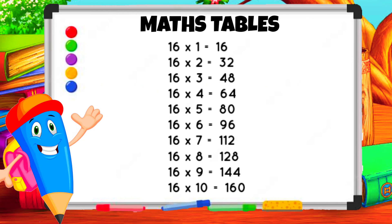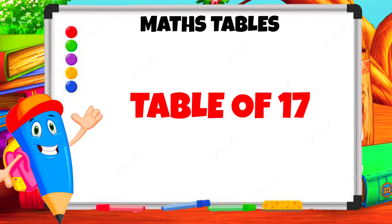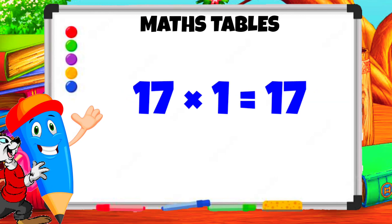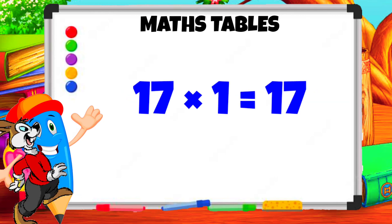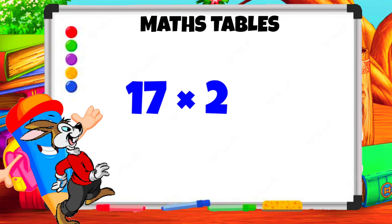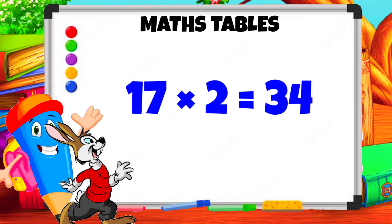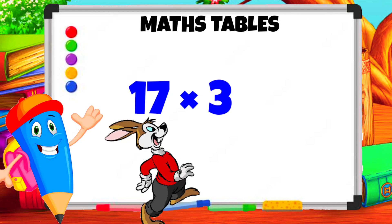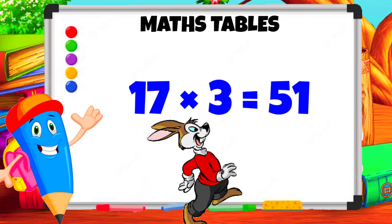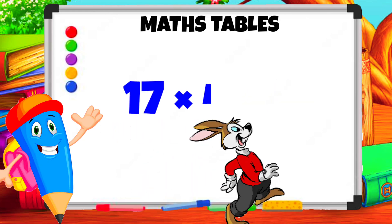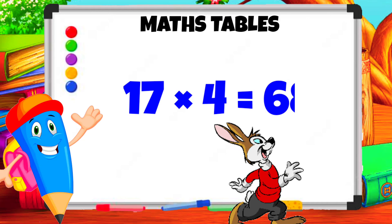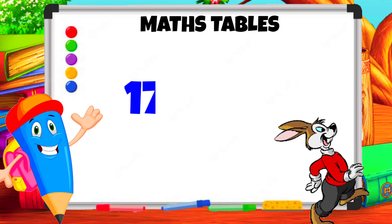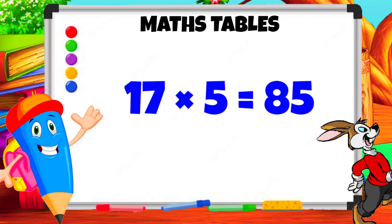Table of 17. 17 1s are 17. 17 2s are 34. 17 3s are 51. 17 4s are 68. 17 5s are 85.